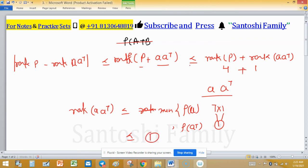This is rank P plus A A transpose. And rank of P is 4 minus, and this rank is 1. So 4 minus 1 is 3. So 3 less than equal to rank of P plus A A transpose less than equal to 5.